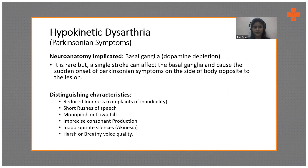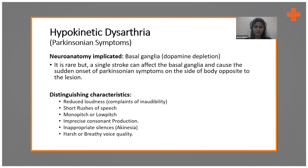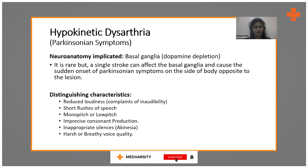Hypokinetic dysarthria is usually associated with Parkinsonian symptoms. Stroke usually does not cause hypokinetic dysarthria, but in rare cases Parkinsonian symptoms can become very evident post-stroke. The features include reduced loudness, short rushes of speech, monopitch or low pitch, imprecise consonant reduction, akinesia, and harsh or breathy voice quality.